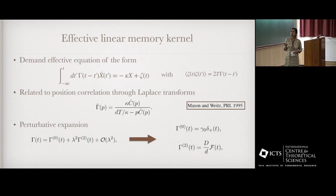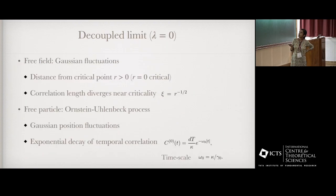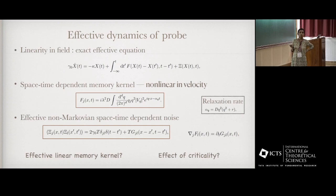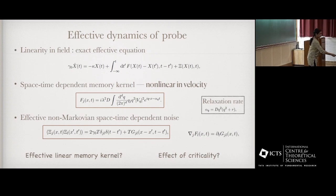We then expanded using the expansion of C and computed the result. The capital V(q) is the Fourier transform of the interaction potential. Surprisingly, the long-time behavior does not depend on the specific form of the potential — as long as it is integrable in the sense that V(0) exists, the long-time behavior goes through. So for example, short-range repulsion will work, as long as V(0) is finite.